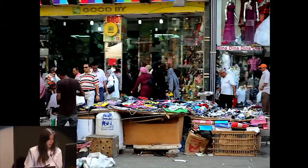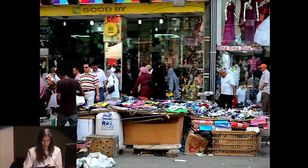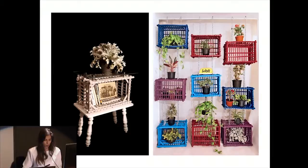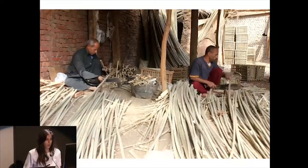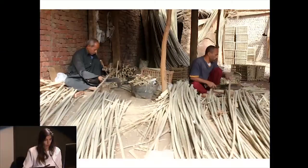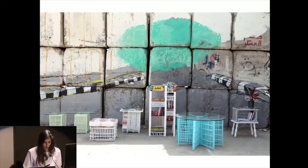My work has also been stimulated by objects found on the street. For example, this particular palm fiber crate inspired a series of products I created, called Off the Grid. It attempted to reuse this crate in different ways using a material from the front of the palm tree — renewable because it's removed during pruning and was traditionally used to make furniture but no longer is. The idea was to work with artisans to create a new interpretation of this material. This was one of my earlier projects in 2010.